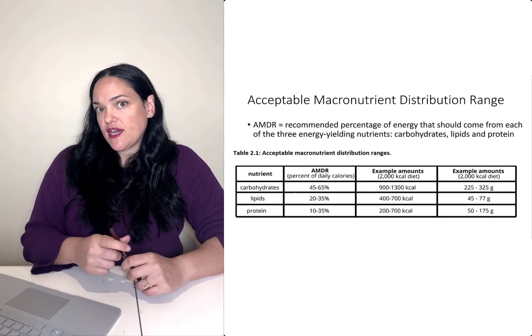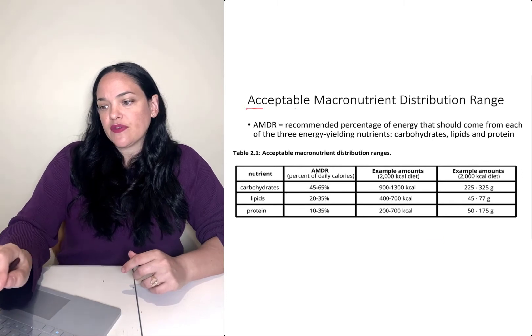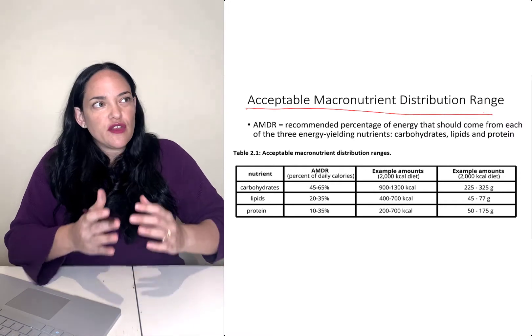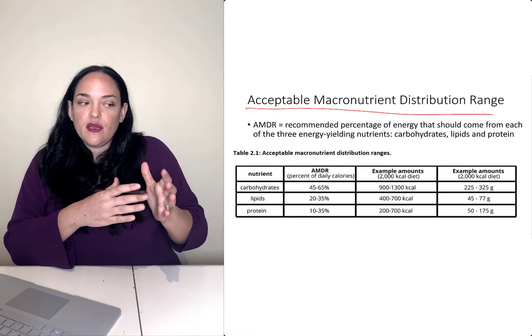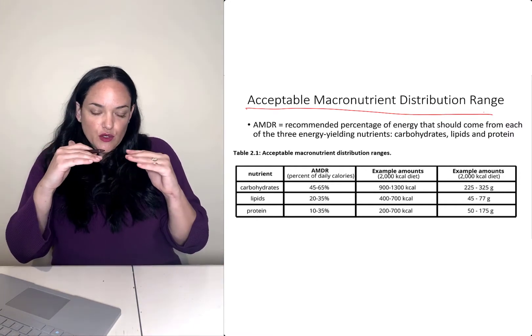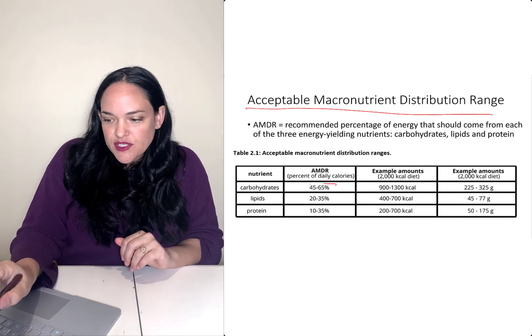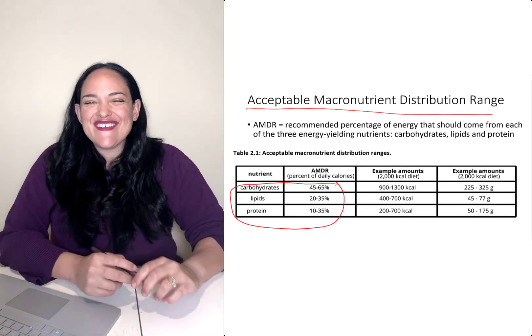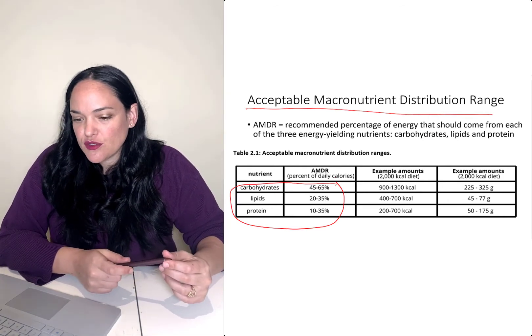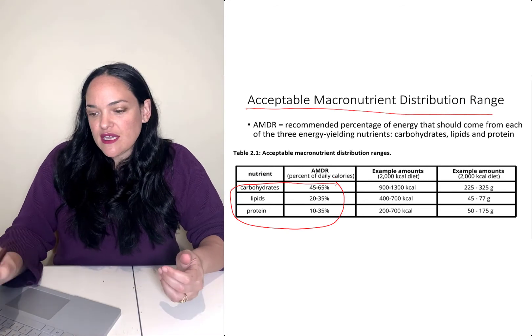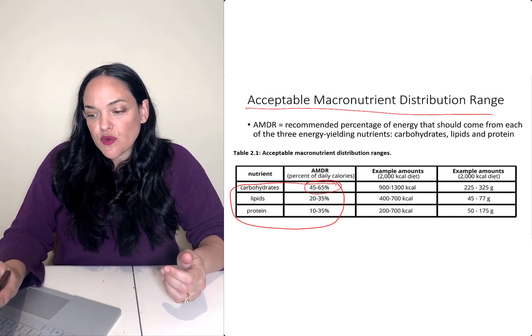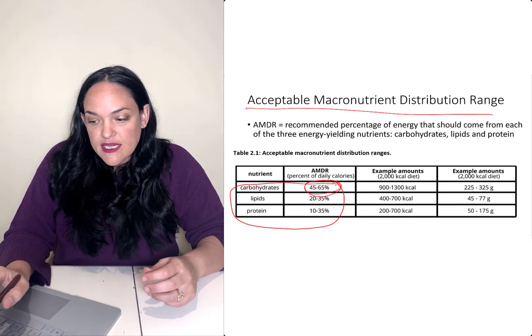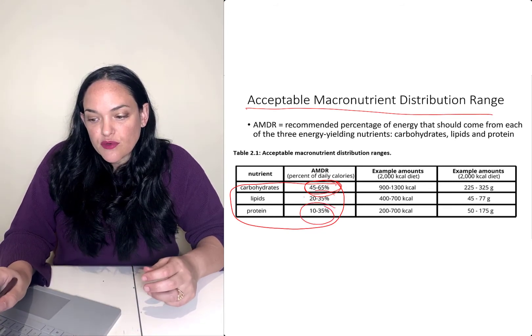Another way that we express energy recommendations is something called the acceptable macronutrient distribution range. And what this looks at is not the total calories you should consume in order to stay at your current size. What this looks at is the percent of calories that should be coming from each of the different energy yielding nutrients. So you'll notice that the AMDRs recommend that the majority of our caloric intake comes from carbohydrates, whereas a smaller amount comes from protein and fat.